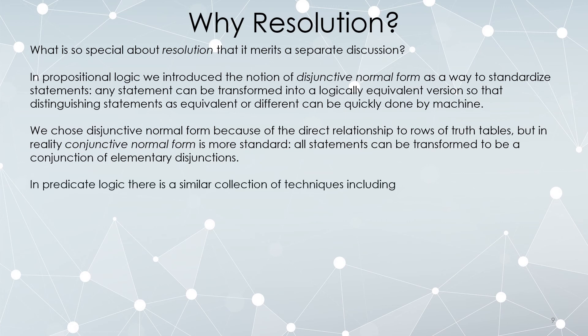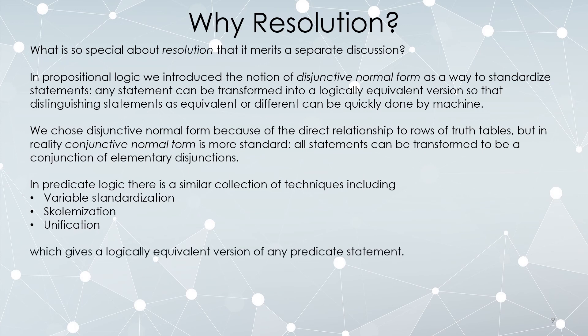In predicate logic, there's a similar collection of techniques involving, and these things we're really not going to discuss, but they're called, if you want to look them up, variable standardization, skolemization, and unification. These are just sort of similar to the steps we went through in talking about disjunctive normal form as a way of making everything look the same. These are similar steps, but they involve predicate statements with quantifiers, and they're a bit trickier. But the point is, it gives a logically equivalent version of any predicate statement. And therefore, you can compare statements easily. Now, this form generates only universal quantifiers and conjunctions of elementary disjunctions.